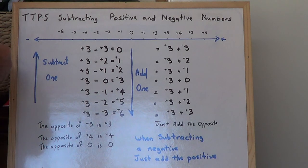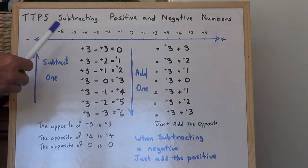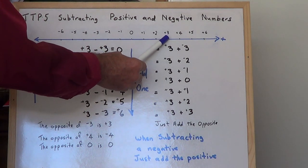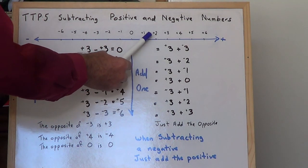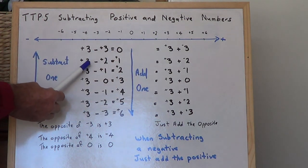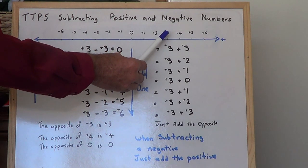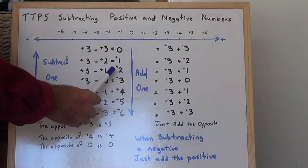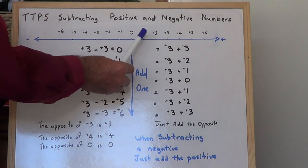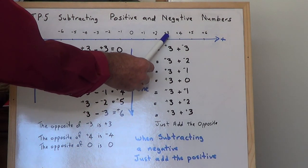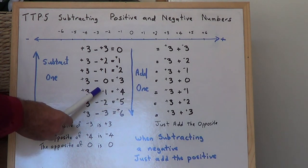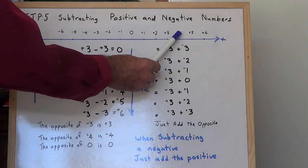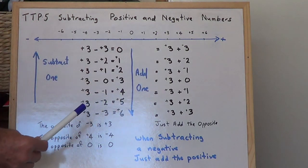You could do it on the number line when you're subtracting a positive. Like, you start at 3 and go down 1, 2, 3 places. Start at 3 and go down 2, so you get to 1. When you get to 3 and subtract 0, you stay there. Then when you subtract negative 1, you go the opposite — you go 1 up.